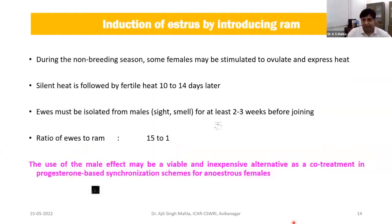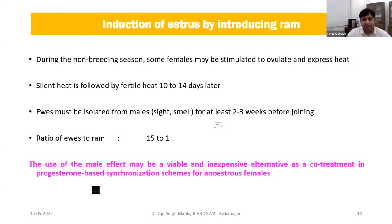How to induce estrus in seasonal breeder animals? One approach is to use the ram effect or buck effect. In sheep and goat, sudden introduction of a novel male can induce ovulation in females that are reproductively quiescent — because they are out of season or lactating. It may work for advancing the first cycle in young ewes. When females kept away from males have a male introduced into the flock, the animal may come into estrus within 6 to 10 days. The first cycle will be a very short phase, and the second estrus after 10 days will be fertile.